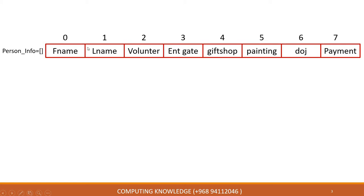For this purpose I have used a data structure array called `person_info`. This array contains seven indices, meaning its length is eight - index starts from zero to seven. Index number zero is first name, index number one is last name, index number two is volunteer, index number three is entrance gate, and so on until index number seven which is payment.